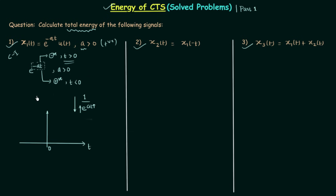When t equals 0, the signal equals e raised to power 0, which is 1. As t increases toward infinity, the signal decreases exponentially toward 0. When t is less than 0, e raised to power minus at increases. Now, multiplying by u(t): u(t) equals 0 from minus infinity to 0, and equals 1 from 0 to infinity.